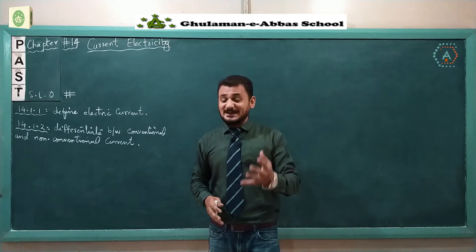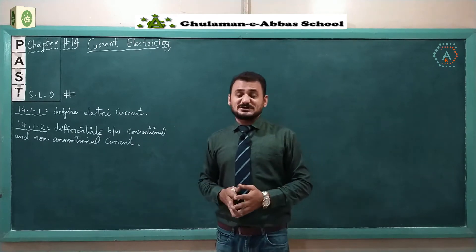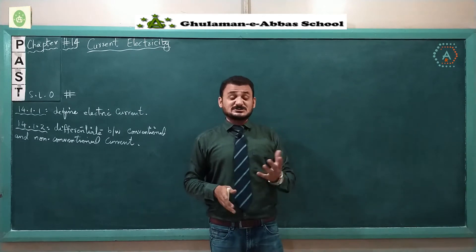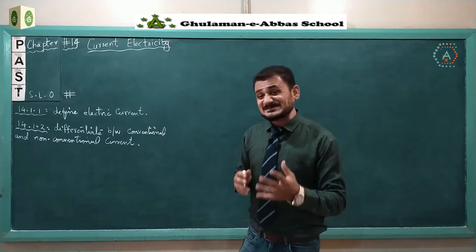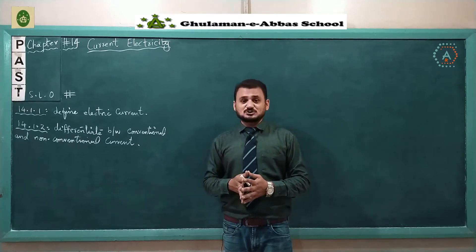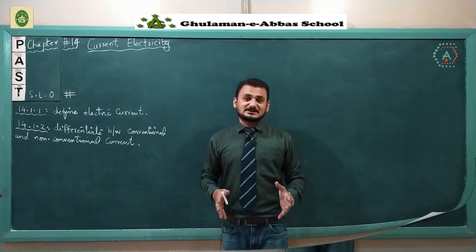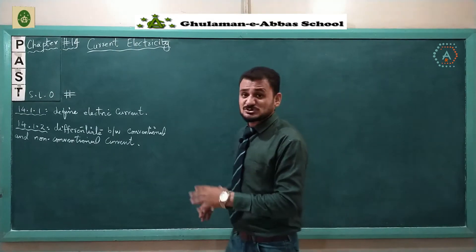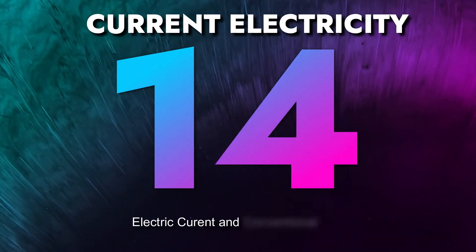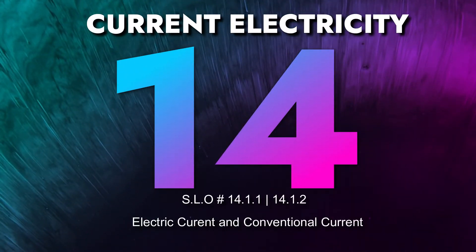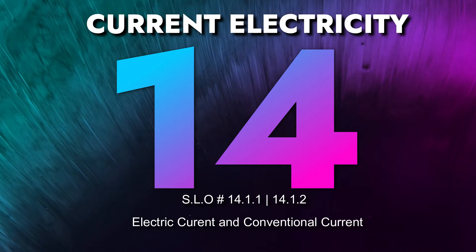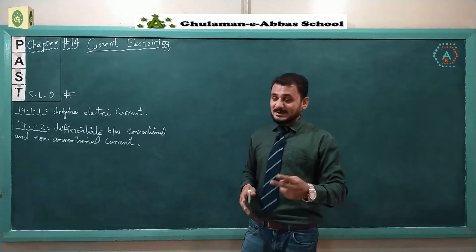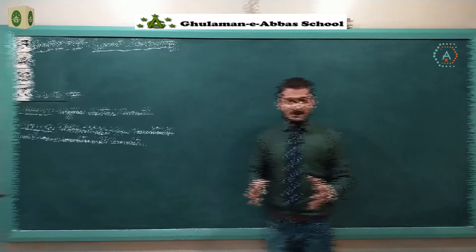At last, we will learn about the safety measures and hazards, which include safety precautions. In today's SLOs, we will start the two starting SLOs — 1411 and 1412 — in which we will learn about the physical quantities: what is electric current and what is conventional current. We will describe these two currents.